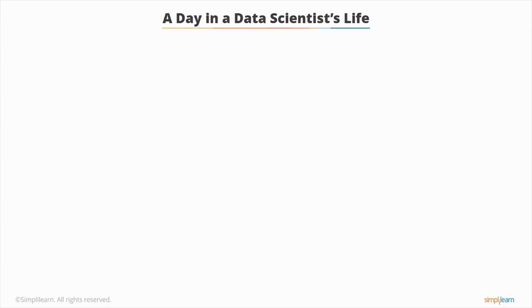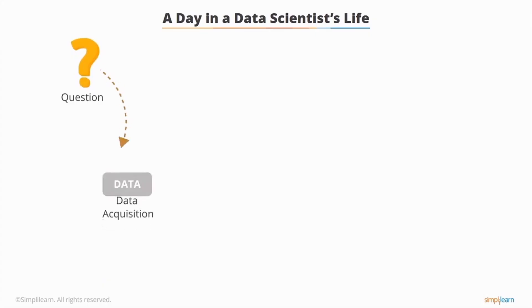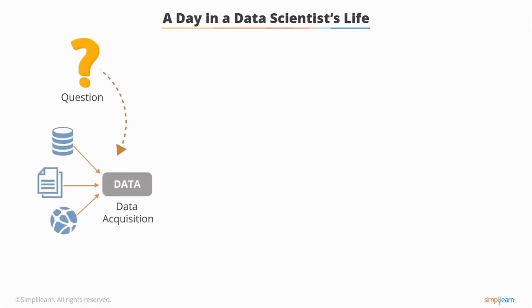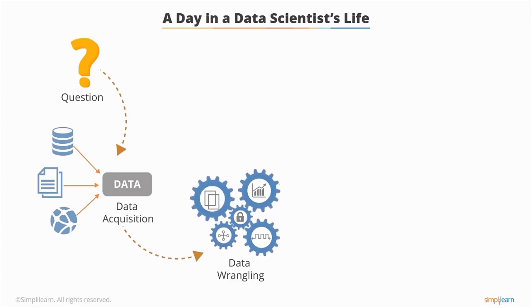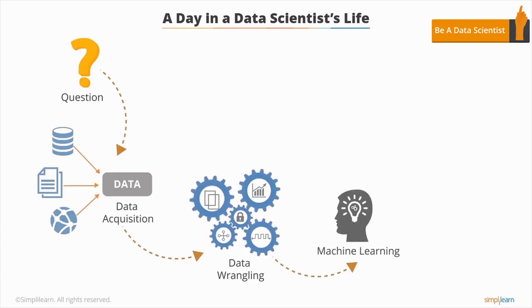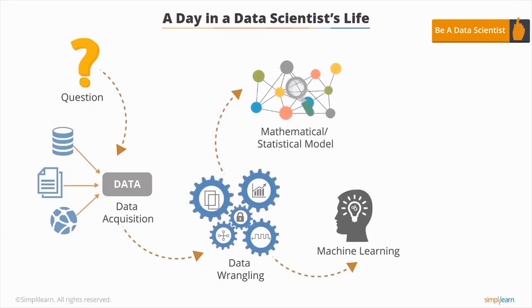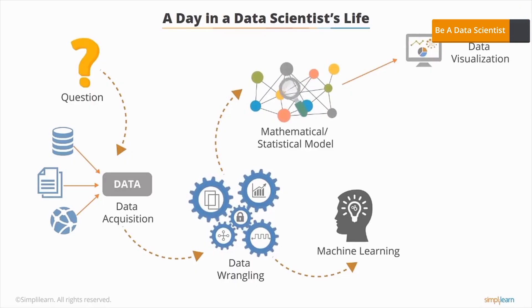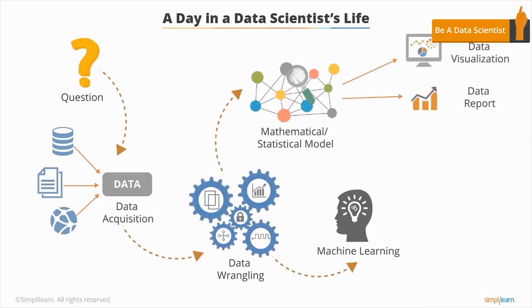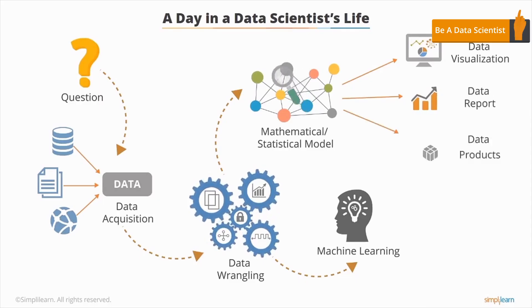Now that you have learned what data science is, it will be easier to understand what a data scientist does. Data scientists start with a question or a business problem, then use data acquisition to collect datasets from the real world. The process of data wrangling is implemented with data tools and modern technologies that include data cleansing, data manipulation, data discovery, and data pattern identification. The next step is to create and train models for machine learning. They then design mathematical or statistical models. After designing a data model, it's represented using data visualization techniques. The next task is to prepare a data report, after which they finally create data products and services.